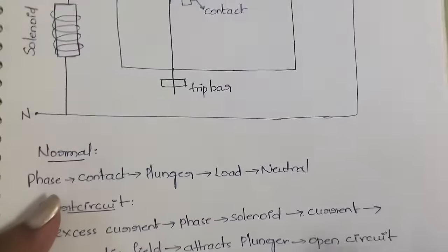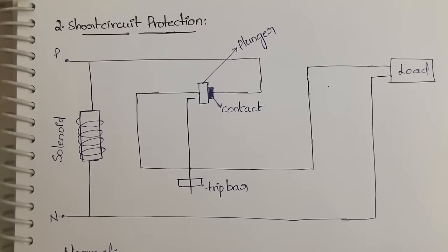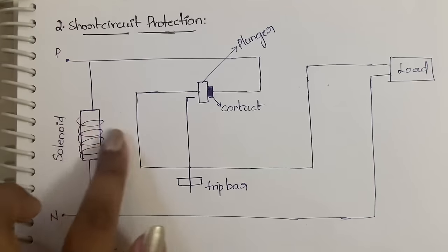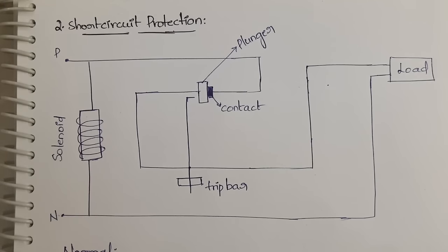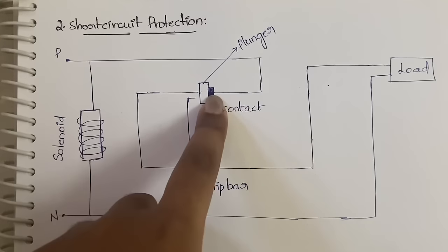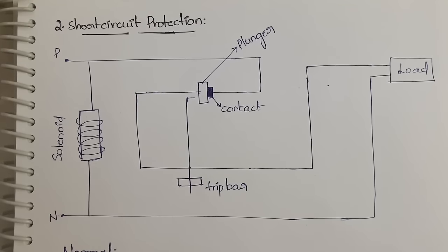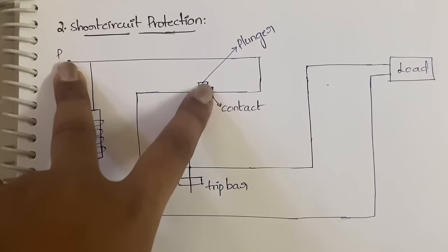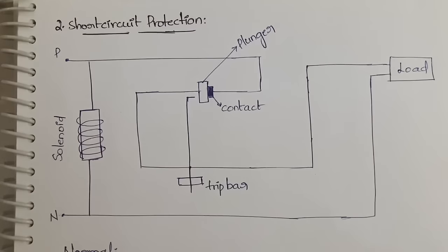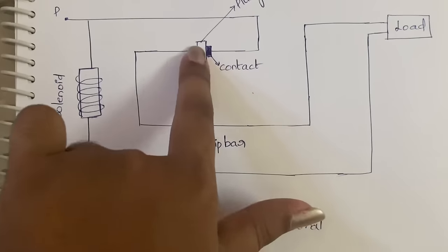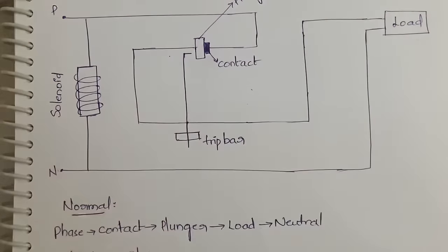Next is short circuit protection. The components here are: phase, neutral, a solenoid with copper wire wound around it, a closed contact, a plunger, a trip bar, and the load. In normal condition, current flows from phase to the contact, from the contact to the plunger, and from the plunger to the load.